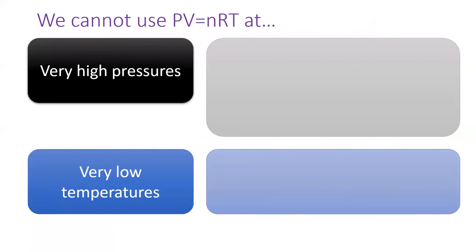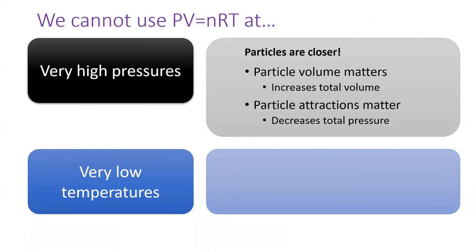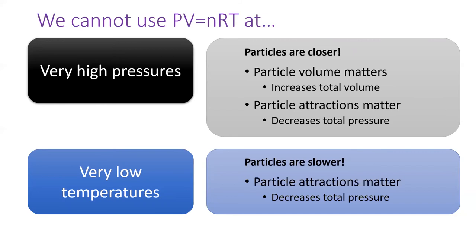In summary, we cannot trust PV = nRT at very high pressures and very low temperatures. At high pressure, particle volume increases total volume and particle attraction decreases total pressure. At low temperature, particles move slower, allowing them more time to stick to each other, decreasing total pressure.